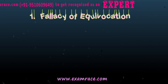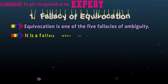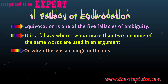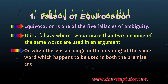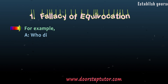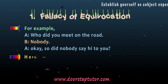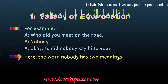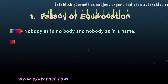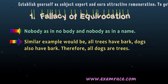Fallacy of Equivocation: Equivocation is a fallacy where two or more meanings of the same word are used in an argument, or when there is a change in the meaning of the same word used in both the premise and the conclusion. For example — A: Who did you meet on the road? B: Nobody. A: So did Nobody say hi to you? Here the word 'nobody' has two meanings. A similar example: all trees have bark; dogs also have a bark; therefore all dogs are trees.